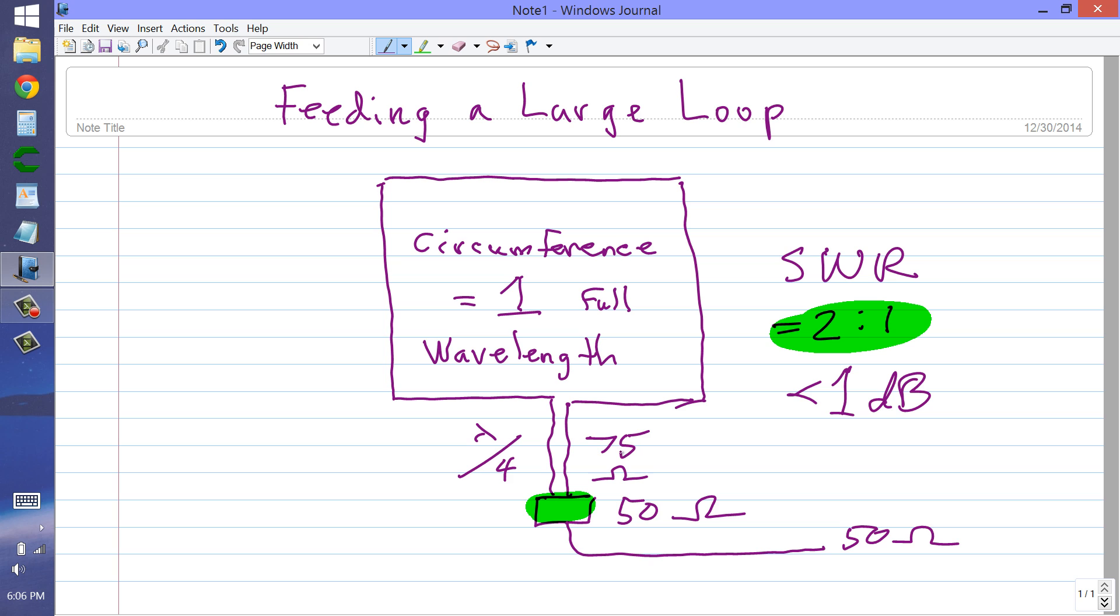That constitutes a pretty nearly perfect system. You'll have only about a 1.3 or 1.4 to 1 standing wave ratio here in this length of relatively low loss line. And then pretty nearly flat SWR all the way down here.